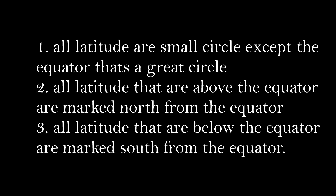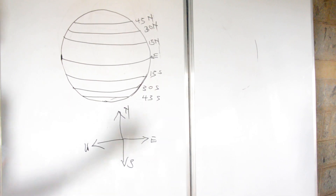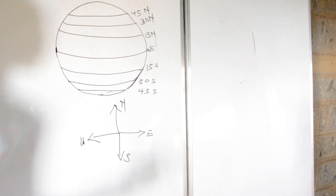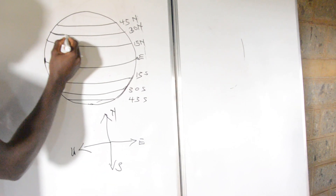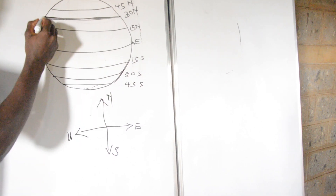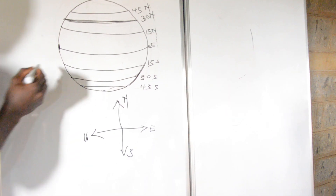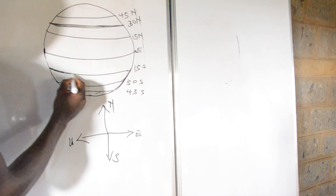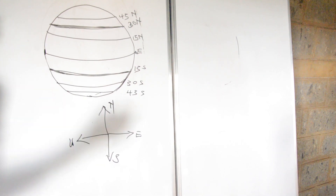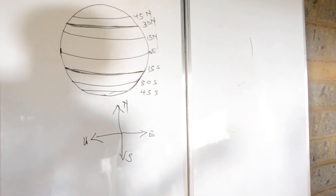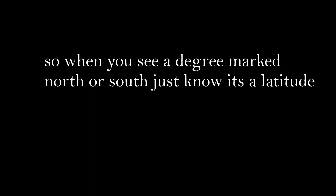So we're halfway through latitudes. All latitudes are small circles except the equator, which is the great circle. All the latitudes above the equator are marked north, and those below the equator are marked south. So when you see a degree marked north, just know that is a latitude, and when you see a degree marked south, just know that is also a latitude.